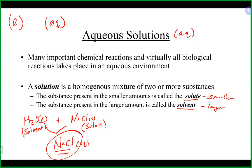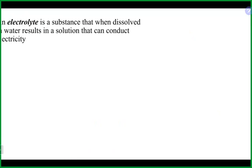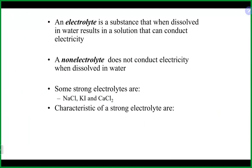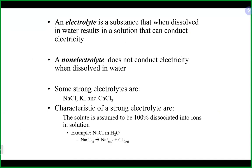When we take solutions and mix them together, we often get a double displacement reaction — either a precipitate being formed, which is a solid, or water being formed in an acid-base reaction. Electrolytes are really important here. Electrolytes are substances that, when dissolved in water, break apart into ions and produce ions in solution.